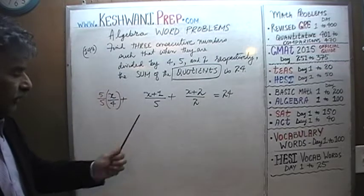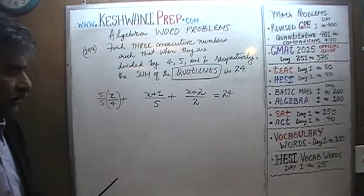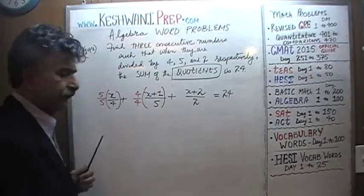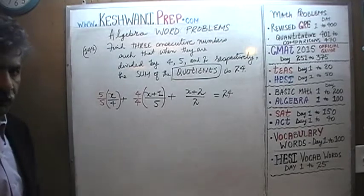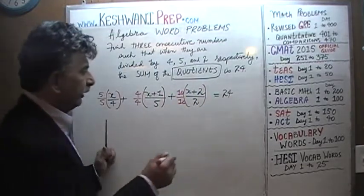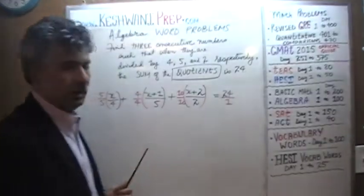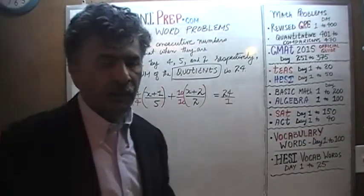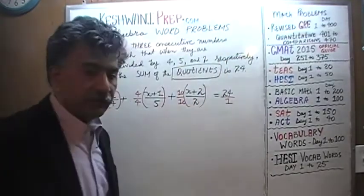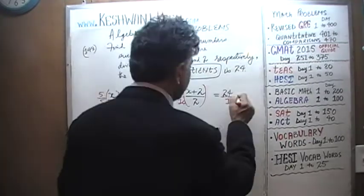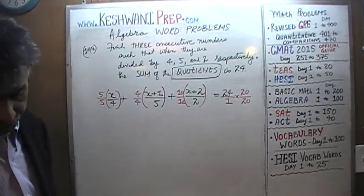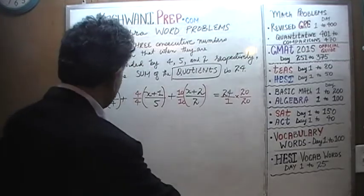To convert the denominator of 4 into 20, multiply top and bottom by 5 over 5. To convert the denominator of 5 into 20, multiply top and bottom by 4 over 4. The term with denominator 2 needs to be multiplied top and bottom by 10 over 10. And the constant 24 — which has a denominator of 1 — we multiply top and bottom by 20 over 20. Now all terms share denominator 20.